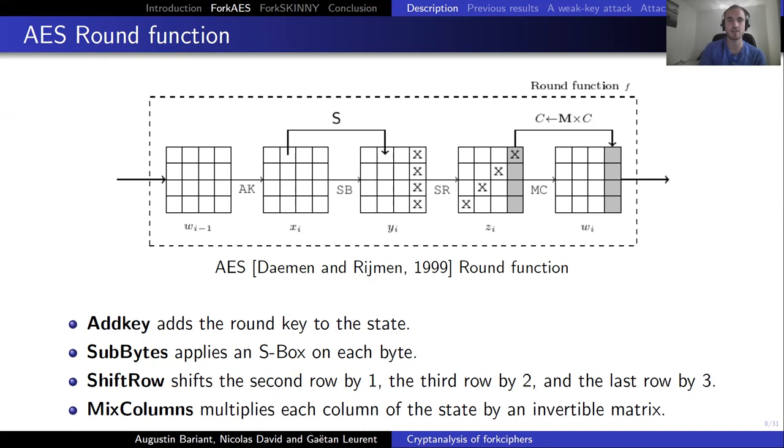The round function of AES is composed of four operations: AddKey, which adds the round key to the state; SubBytes, which applies an S-box on each byte of the state; ShiftRow, that shifts each row by a certain offset; and MixColumn, that multiplies each column by a linear invertible matrix.